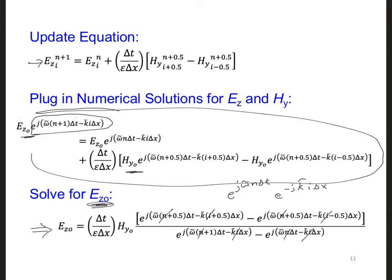And in the numerator, we can pull out the common e to the j omega 0.5 delta t out in front.